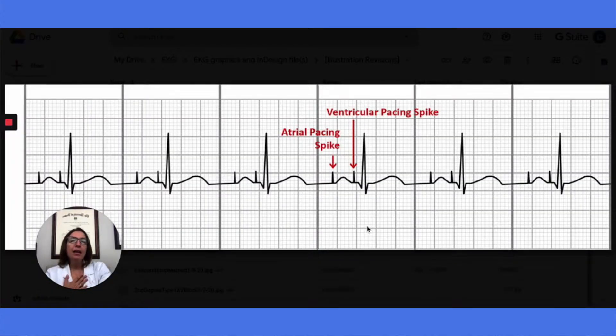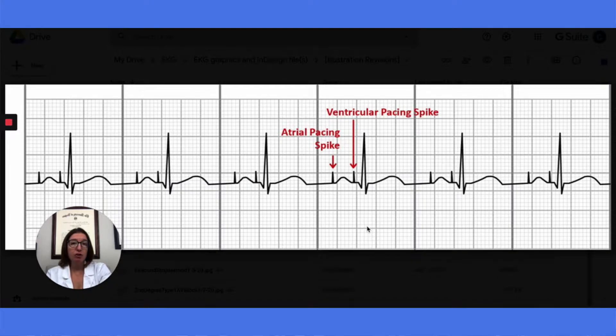We'll also be talking about bradycardia as well as tachycardia — what can cause those dysrhythmias, what are the symptoms, and what are the pharmaceutical and electrical interventions we can use to treat them. When a patient's natural pacemakers fail to maintain sufficient cardiac output, they may require a pacemaker. Pacemakers emit a pacing stimuli, which shows up as a spike on the EKG strip. Pacemakers can provide atrial pacing, ventricular pacing, or both, which is called AV pacing.